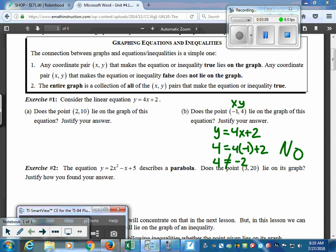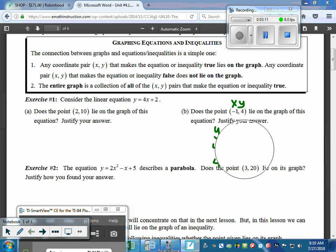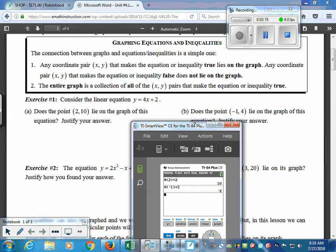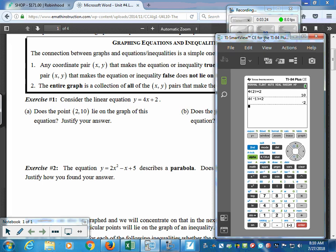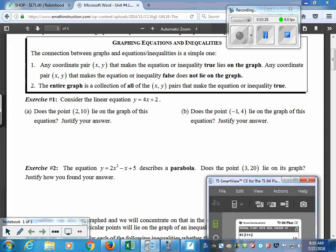So, that's pretty much the gist with what we're going to have to focus on with this. But, again, substitution is an extremely important part of being successful in the regents. Now, if you look at 2, they give us a quadratic equation, which we talk a lot about in Unit 3. And they want us to know if (3, 20) lies on the graph. And, again, it says justify, so they want us to show how we got it. So, we got x and we got y.